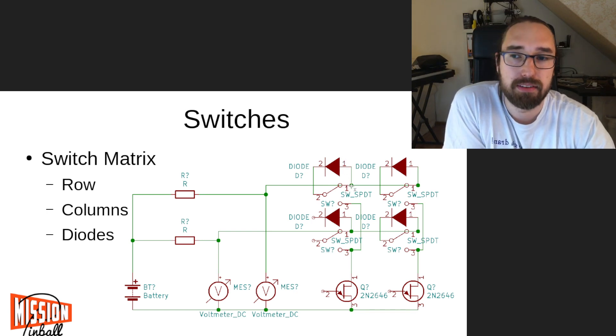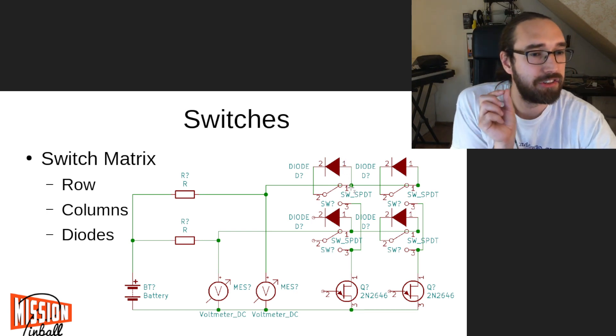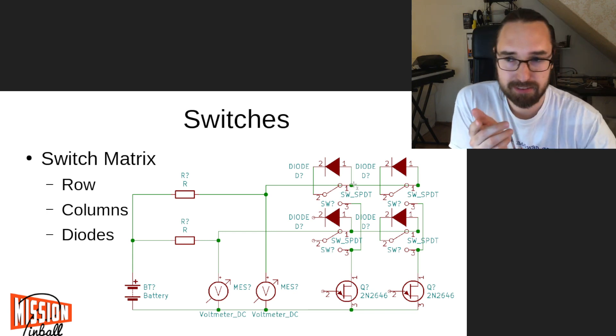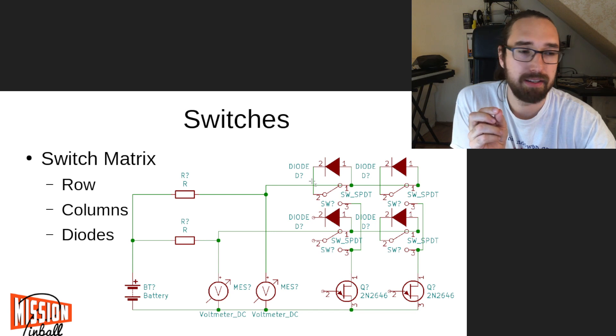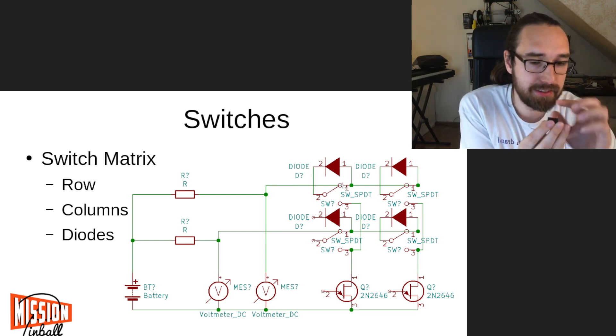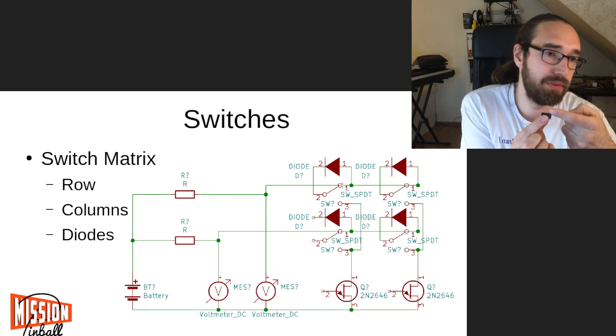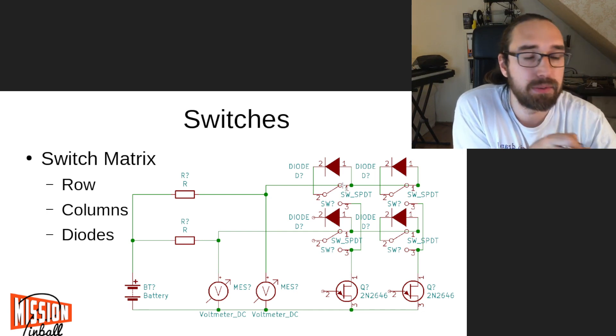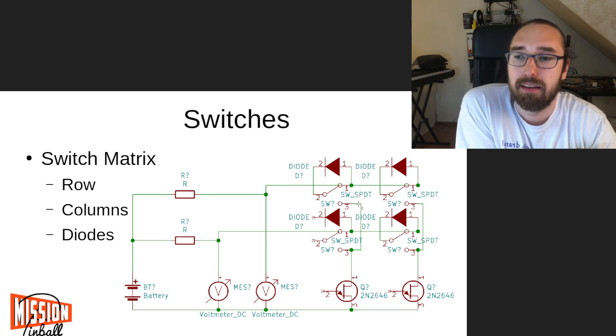They basically use this connector just as an additional soldering point. So it's not needed. You could also just put the diode into the wire. But this is probably easier to first solder the diode to the switch and then solder the wire to this one. I guess that's the reason why they do it this way. But this is how switch matrices work.